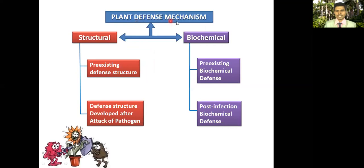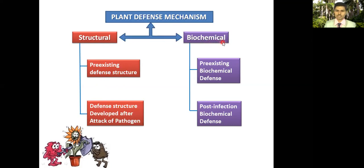Plant defense mechanism may be structural or biochemical. Plants have both structural and biochemical systems with which they can defend themselves. As far as structural defense mechanism is concerned, there are two types: pre-existing defense structures already present in the host plant, and defense structures developed after the attack of a pathogen.